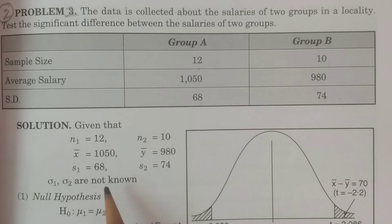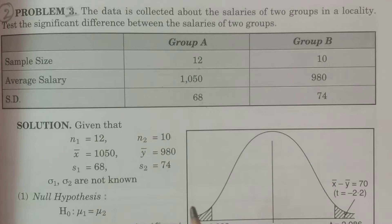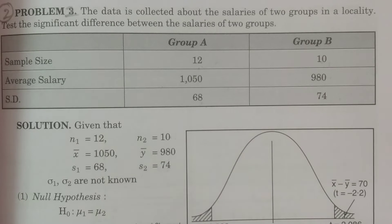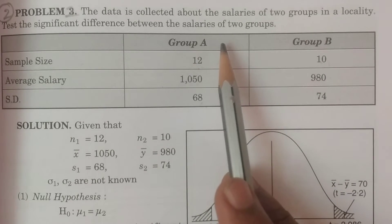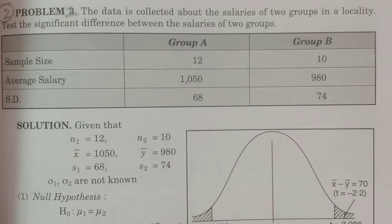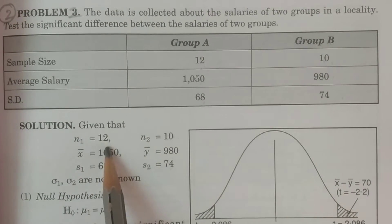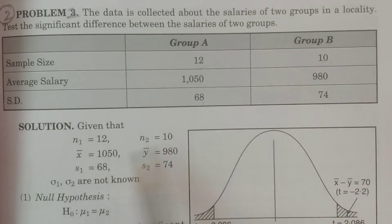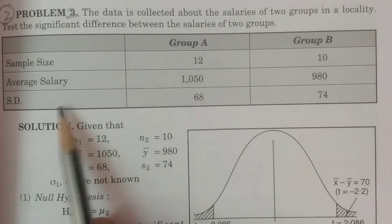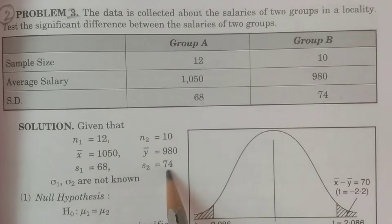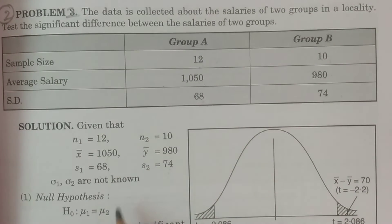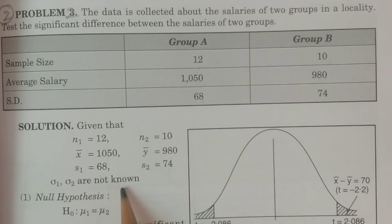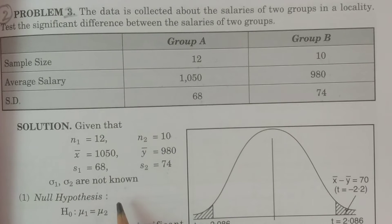What is important is means of small sample and what is significance. Standard deviation. We have to calculate the average salary. S1 = 68, S2 = 74. In this case, sigma1 and sigma2 are not known — this is the not-known case.